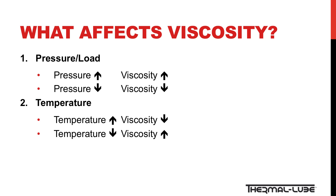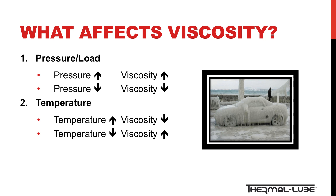Next, we have temperature. As the temperature of the lubricant increases, the easier the lubricant flows and the lower the kinematic viscosity. Conversely, as the temperature goes down, the greater the resistance to flow and the higher the kinematic viscosity. This helps explain why the wrong lubricant in a cold environment makes it difficult to start vehicles or machinery.